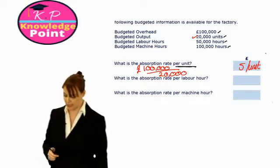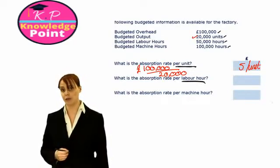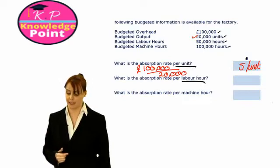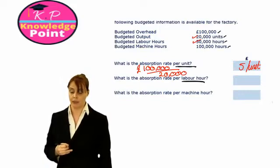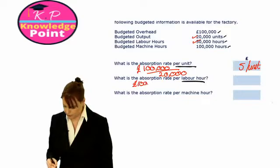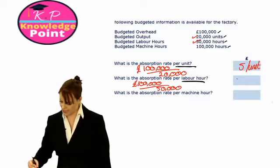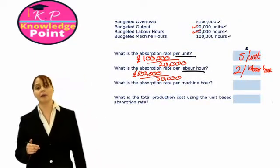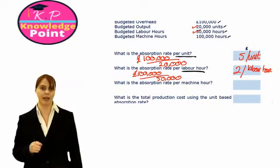We could also calculate our overhead absorption rate using labour hours. Our OAR is still budgeted overheads divided by budgeted activity, but this time budgeted activity is our labour hours. So our OAR is £100,000 divided by 50,000 hours, giving us £2 per labour hour. For each labour hour we spend working on a unit of the product, we charge £2 in overhead cost.